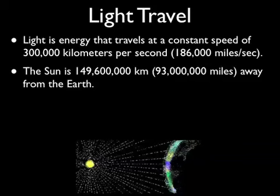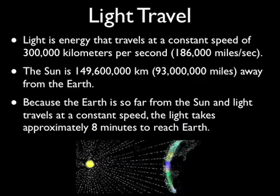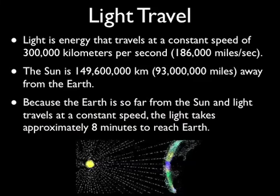It's not instantaneous, even though light travels at a constant speed. Because the Earth is so far away from the sun and light can't speed up or slow down, it takes the light approximately eight minutes when it leaves the sun to reach the Earth. The Earth is so far away from the sun that it takes eight minutes, even traveling at 186,000 miles per second.